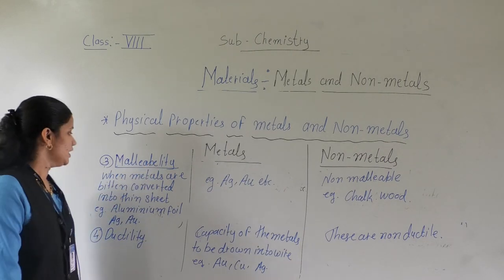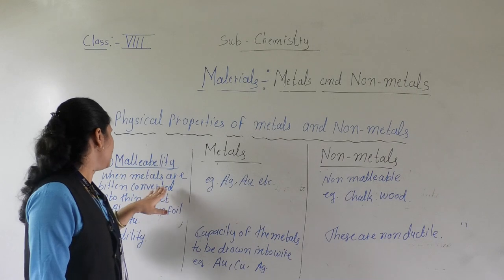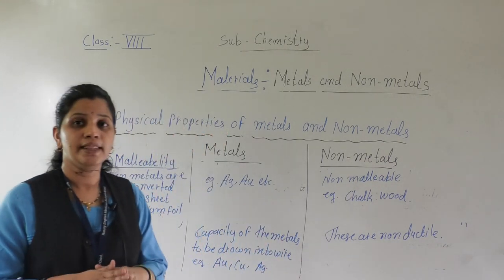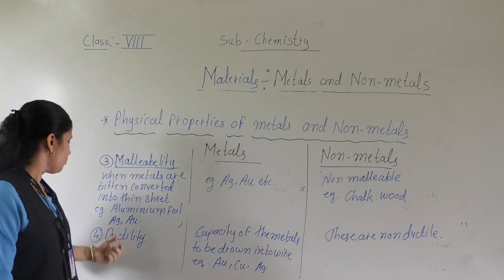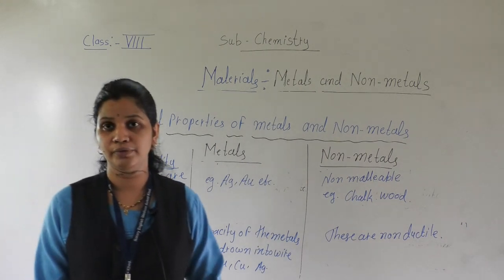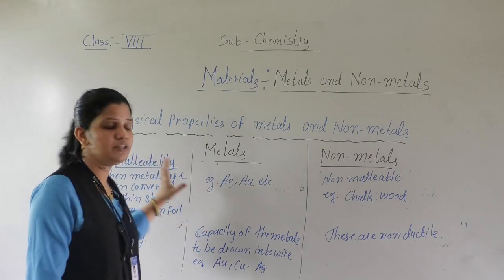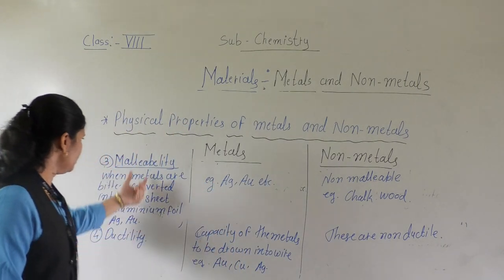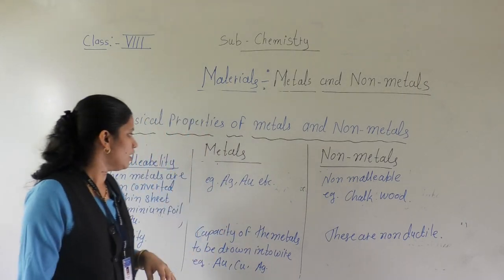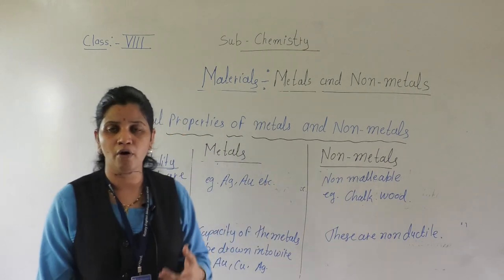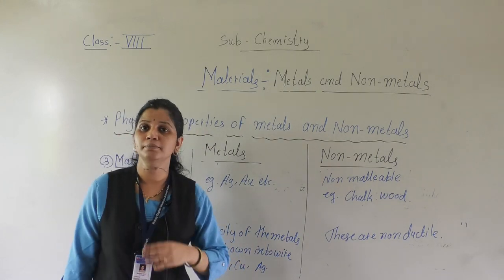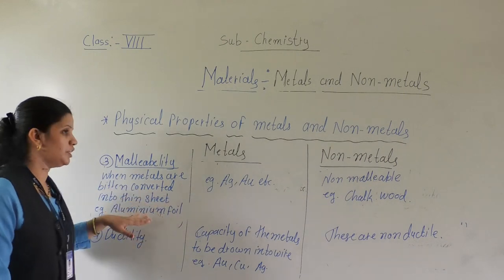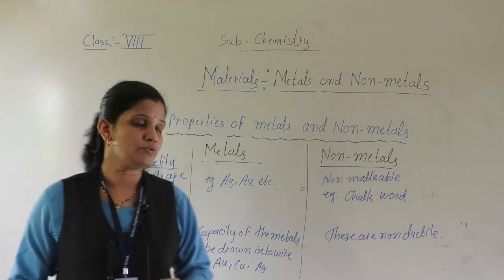The third property is malleability. Malleability means when metals are beaten, they are converted into thin sheets. When any metal is beaten, it converts into a thin sheet — that property is known as malleability. For example, aluminium foil — we use it because it has the property of malleability. Metals can be converted into thin sheets. Examples: Ag (silver), Au (gold), copper, iron — they all show the property of malleability. That means beaten and converted into a thin sheet.